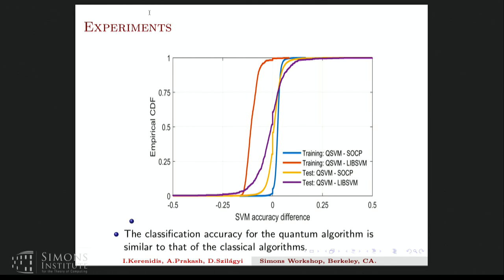And also, it's important to see that the classification accuracy of the quantum and classical algorithms are very similar. So this is a plot of the classification accuracies on the training and test sets. So the blue and the yellow lines are the ones which compared it to the classical SOCP solver. So as we can see, the accuracies are very close because they're basically using the same algorithm. And the red and the purple lines are the ones which compare against the libSVM. So the algorithm is different. So we see a wider gap, but it's still quite comparable in performance to the classical algorithms in terms of accuracy.